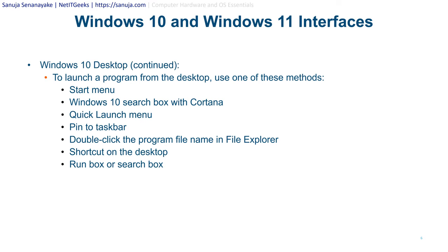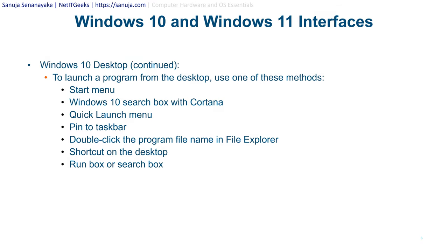Windows 10 desktop also has the ability to use the GUI to launch a program. You can use multiple ways to do that: the start menu, the Windows 10 or Windows 11 search box with Cortana, quick launch menu, pin to taskbar, double-click the program file in File Explorer, a shortcut on the desktop, or simply use the run box or search box. All of those items can be used to launch a program or software in Windows 10 as well as Windows 11.